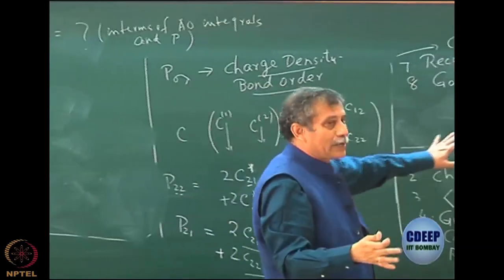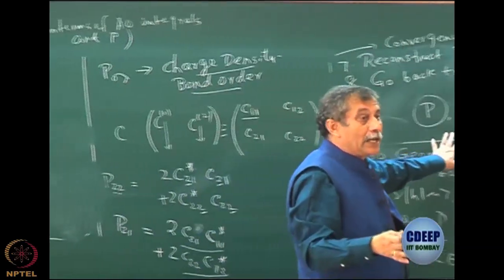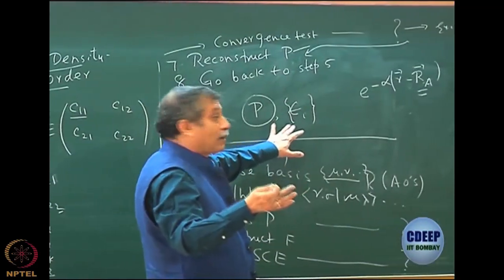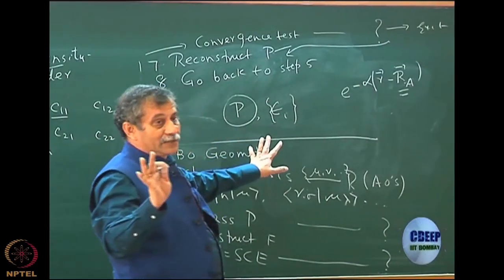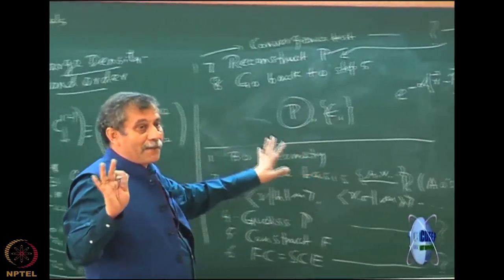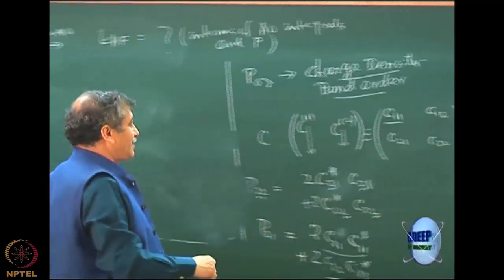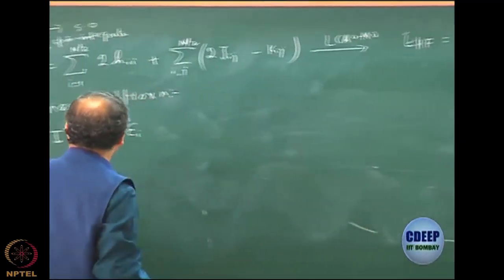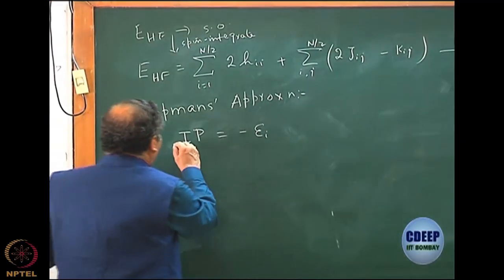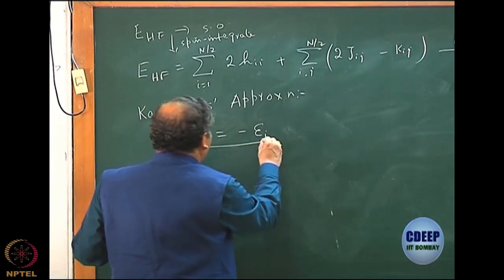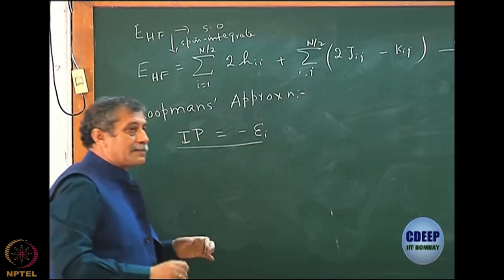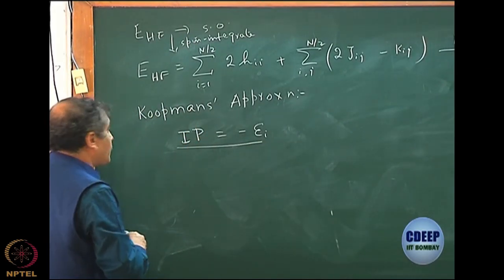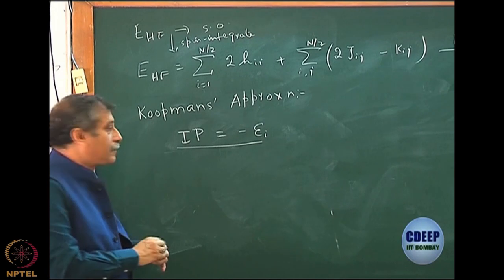The energies I get are actually molecular orbital energies - do not forget it. I am saying that my ionization potential is minus epsilon_i, and the whole approximation was built on the fact that the molecular orbitals of the N minus 1 electron wave function are built out of the N electron spin orbitals.